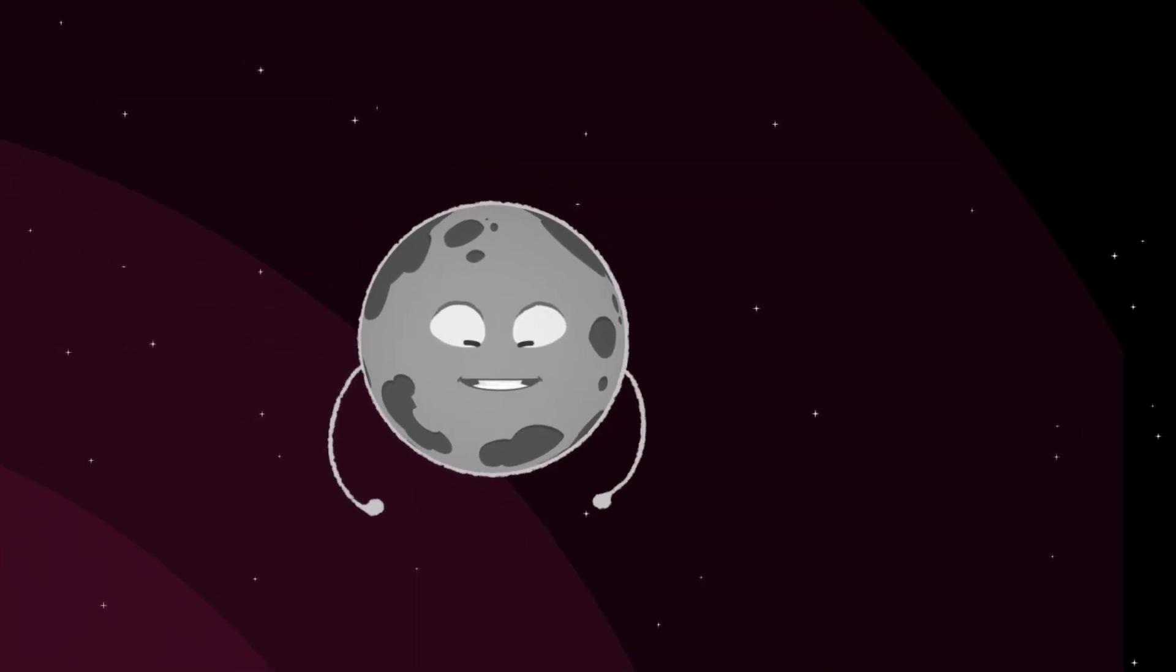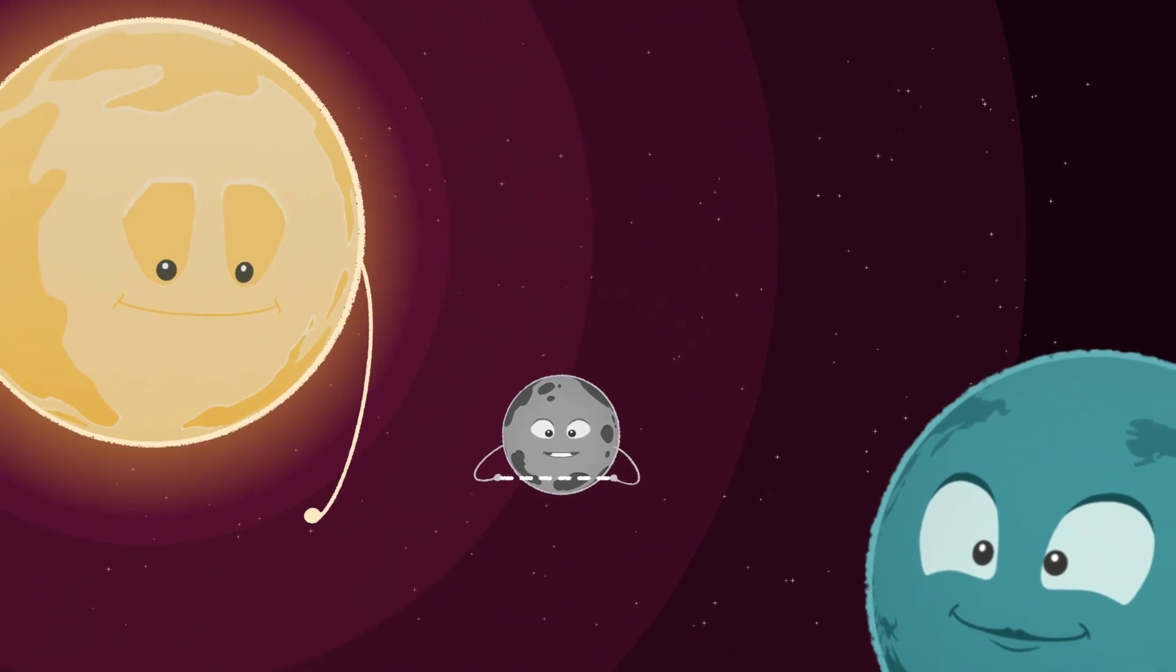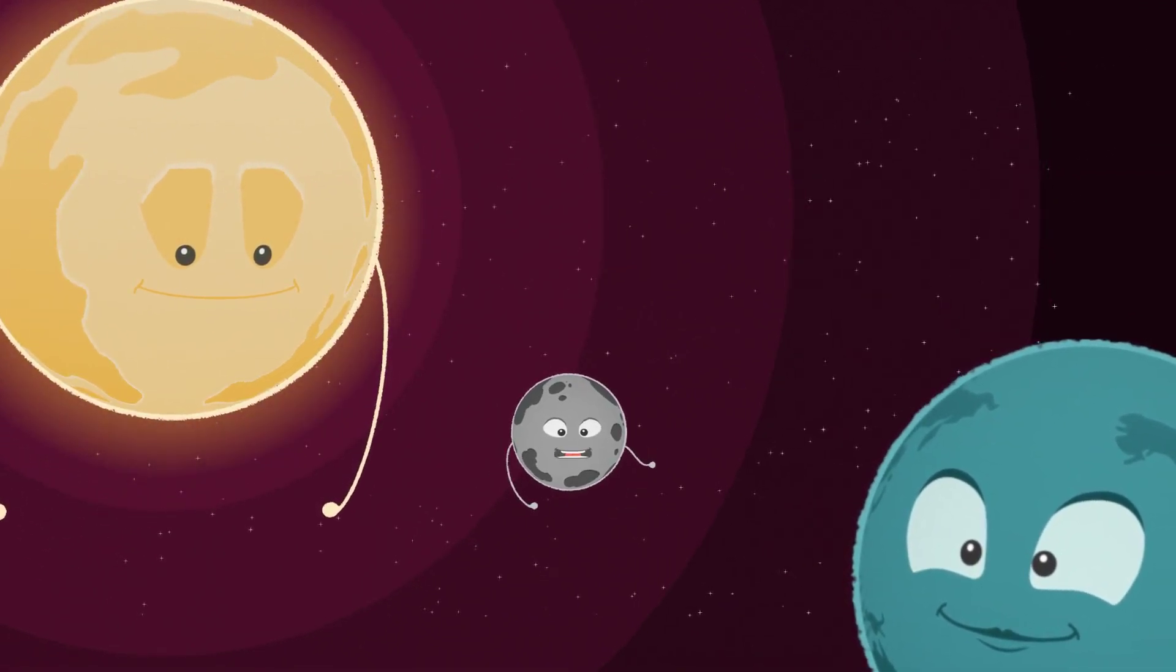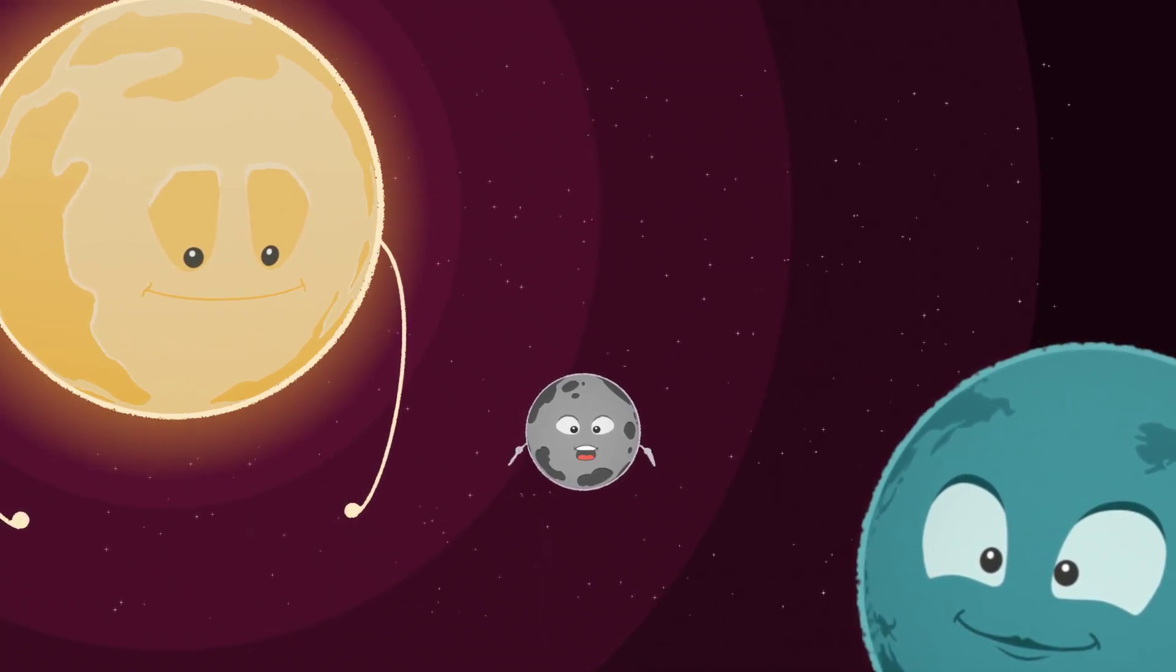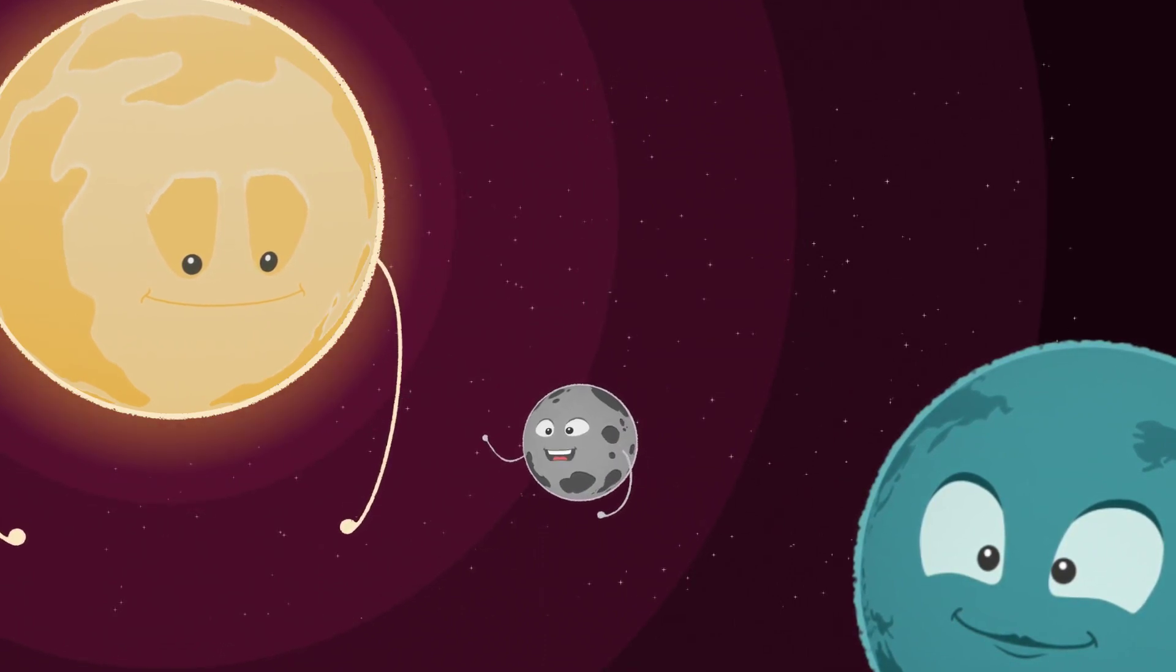My orbit is tilted compared to Earth's. Fact is, we only have two points where our orbits are aligned. And that alignment only happens 13 or 14 times every century in May or November. That's when you can see me take my trip, or transit, across the face of the Sun.